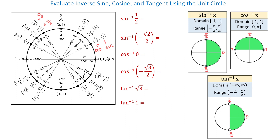In this video, we will be evaluating inverse trigonometric functions. This means that we are given the value of a trigonometric function and we need to find the corresponding angle. For example, in the expression inverse sine of 1 half, 1 half represents the value of sine and we need to find the angle whose sine is 1 half.